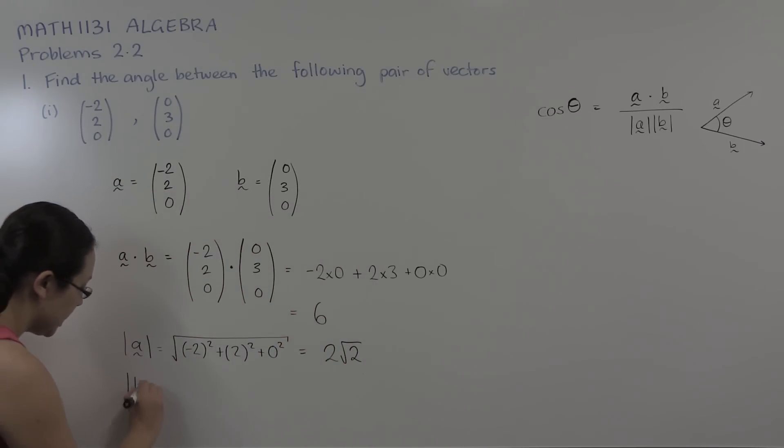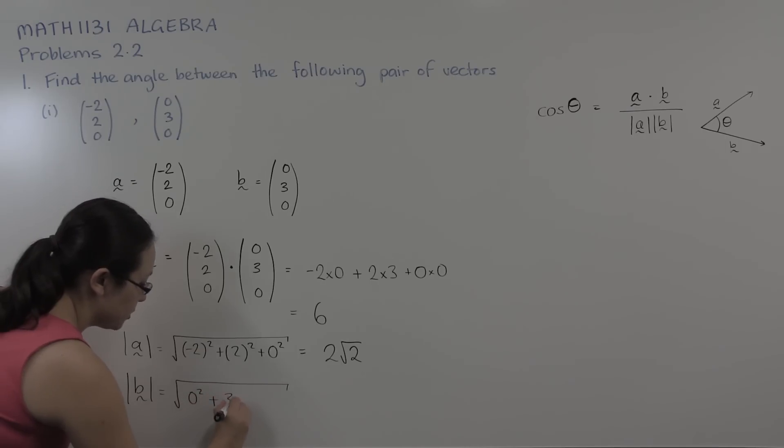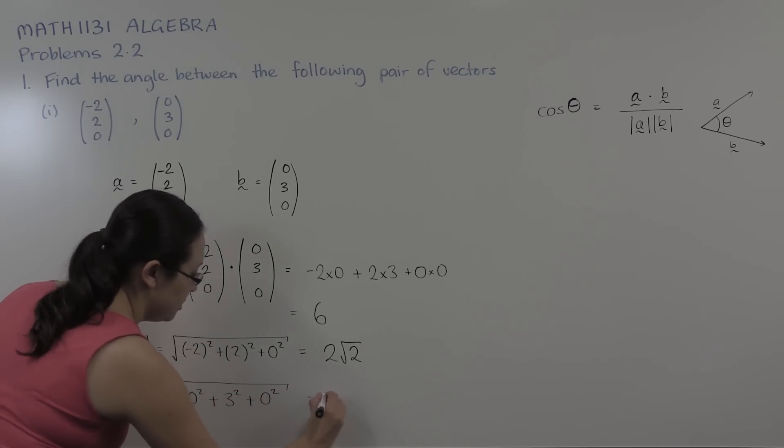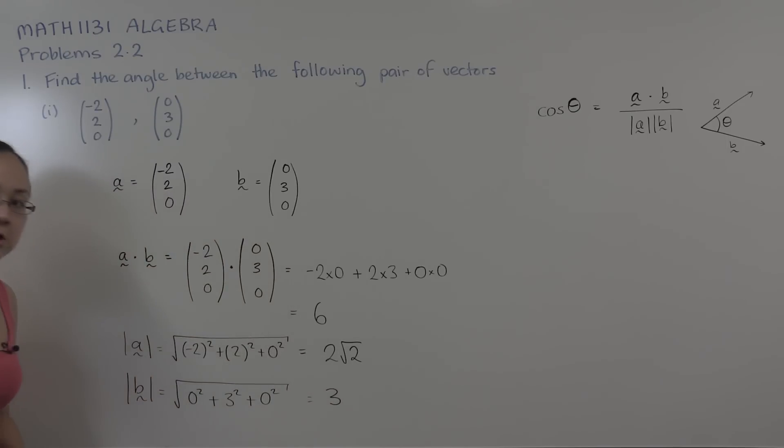Similarly we can calculate the length of vector b. That's the square root of the sum of the squares of the components of b. Well that's just zero squared plus three squared plus zero squared. That's square root of nine, so that's three.